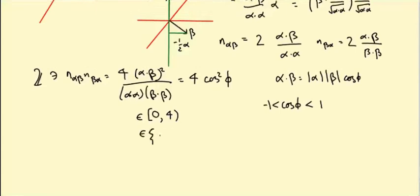How many integers are there between 0 and 4, not including 4? Well, not many: there's 0, 1, 2, and 3. So these are the only possibilities.